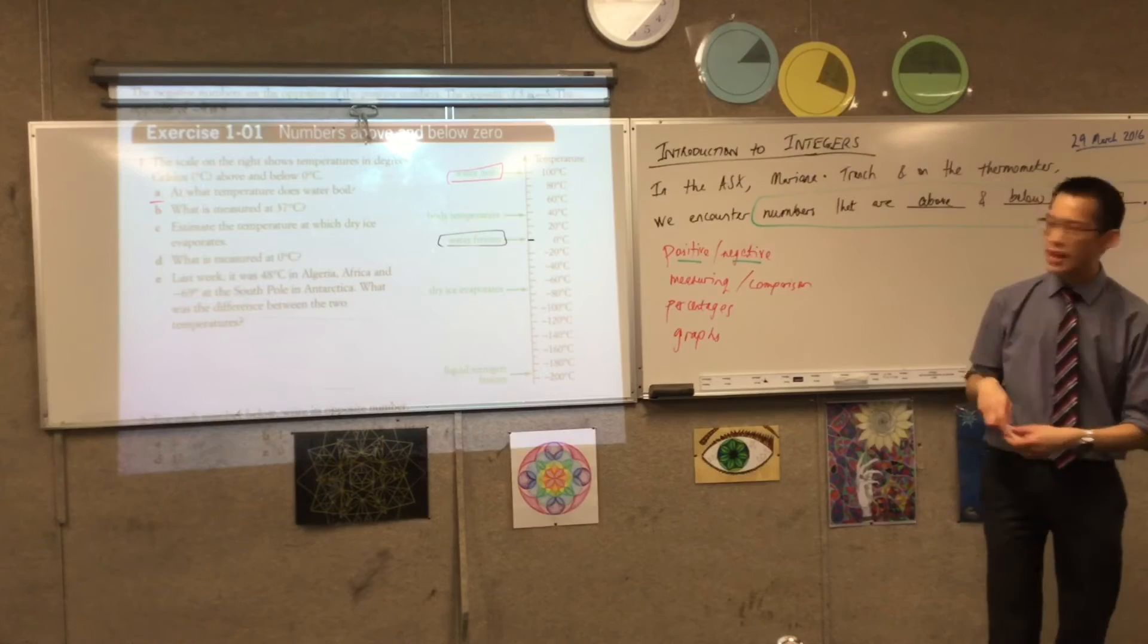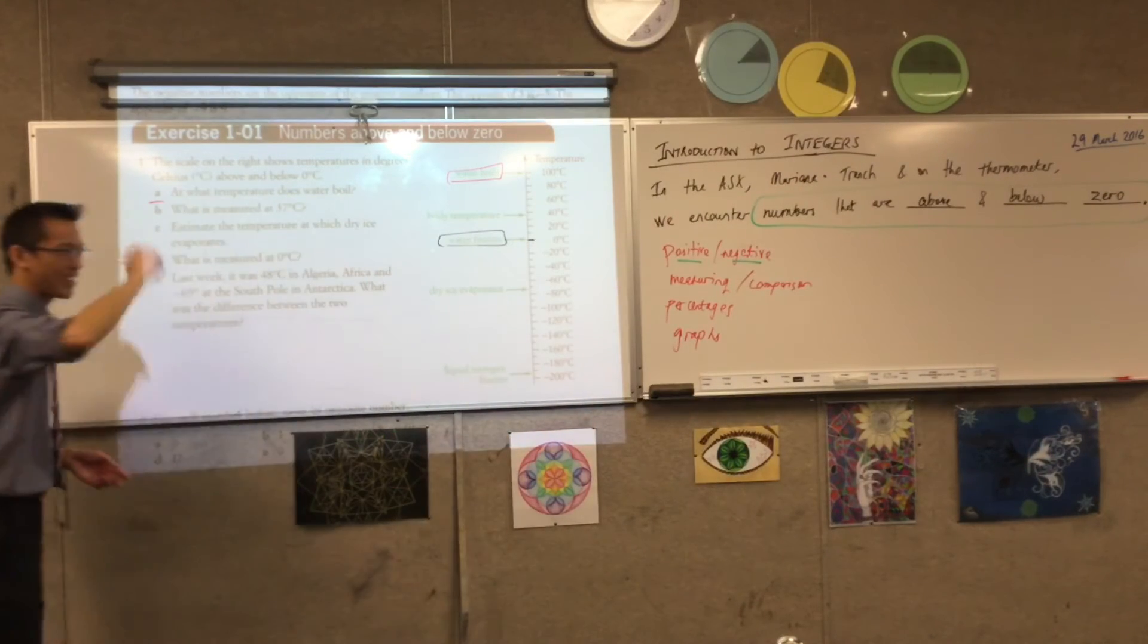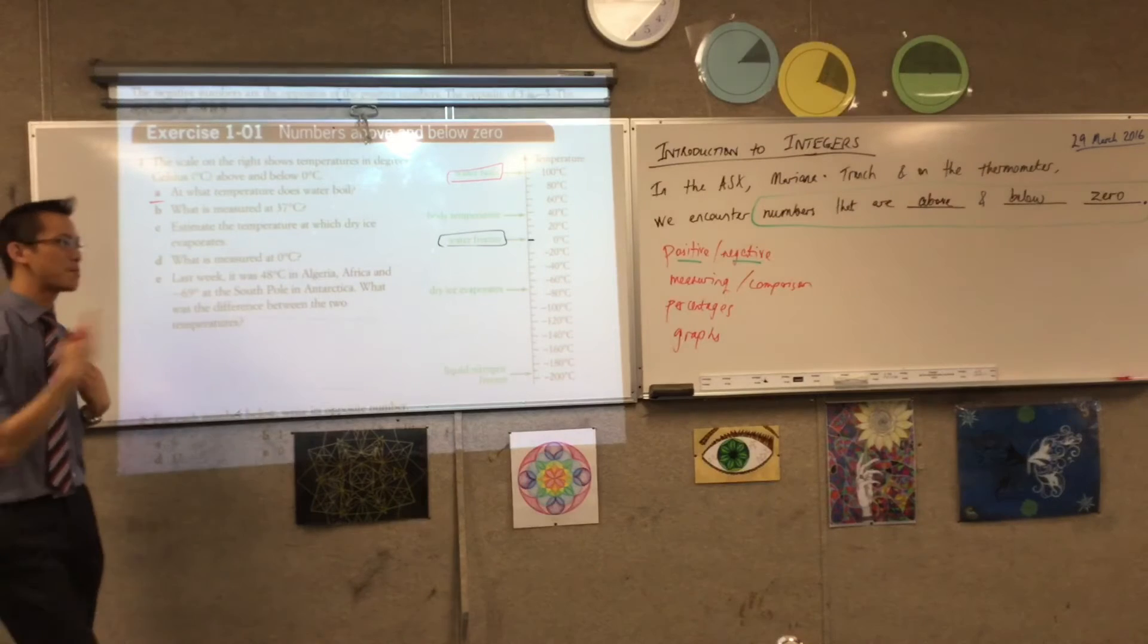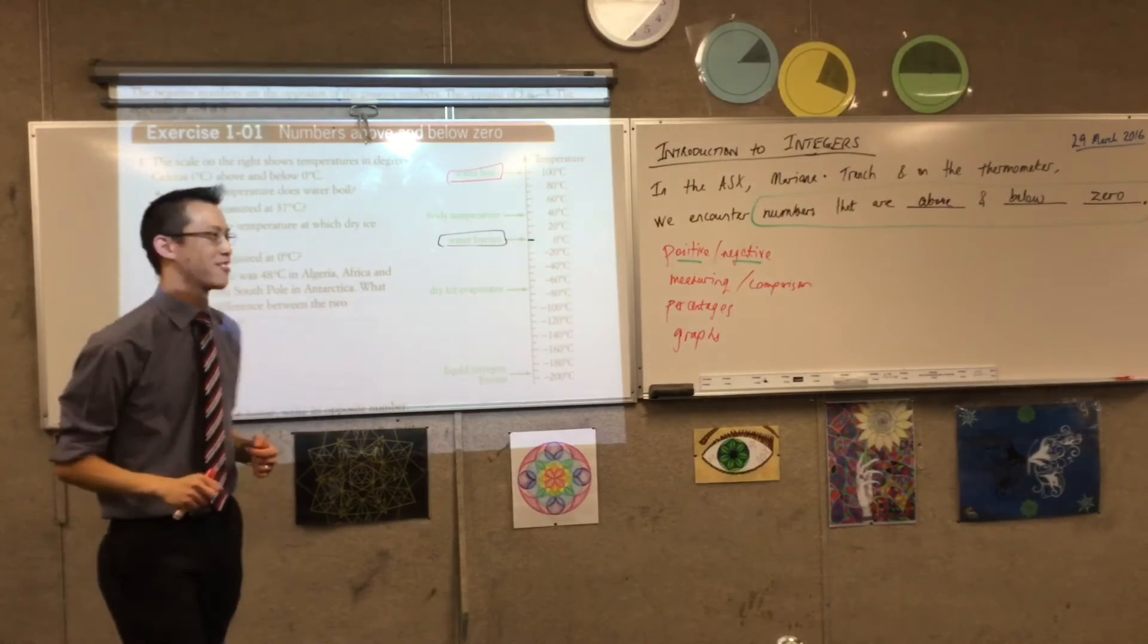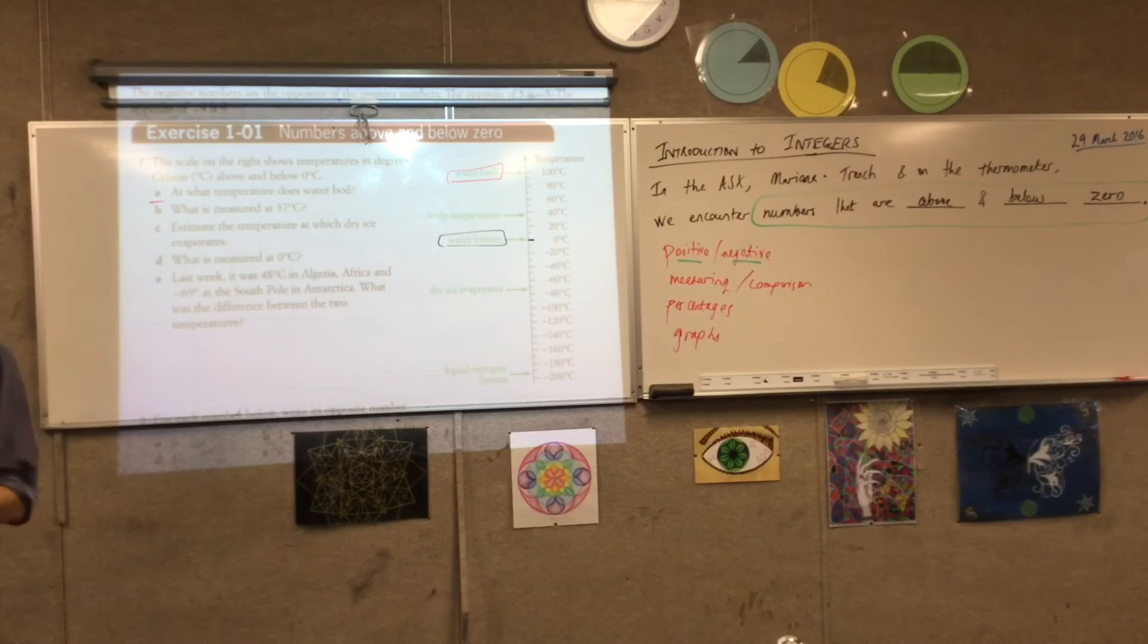37 degrees. What's measured at 37? What's important about 37 degrees? Yeah, come here. It's our body temperature. It's body temperature. At least body temperature, if you're alive, right? Yeah. So, we're warm-blooded. We keep our core temperature at the same temperature all the time, unlike cold-blooded. Okay?